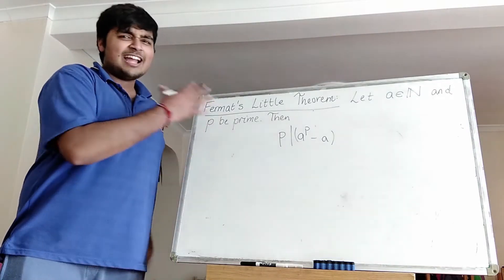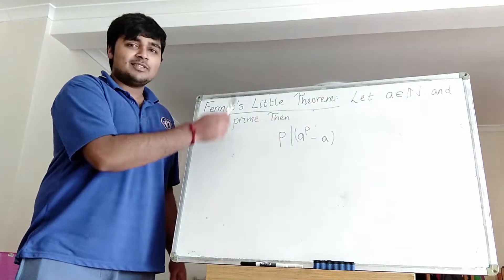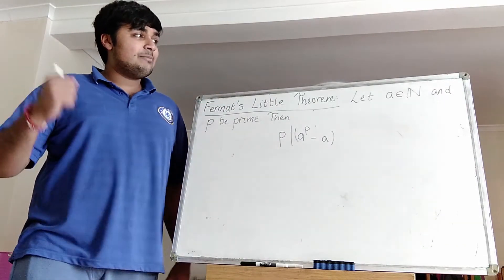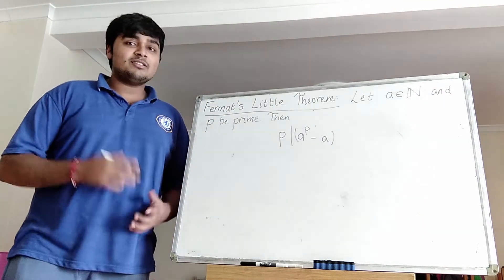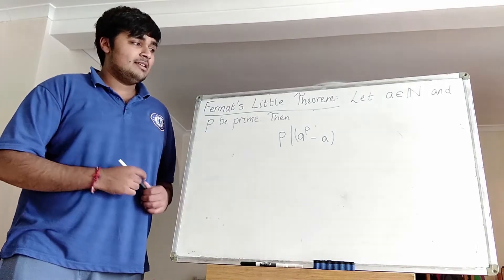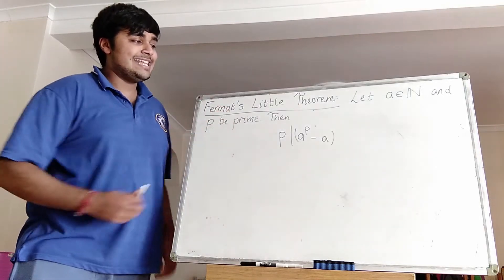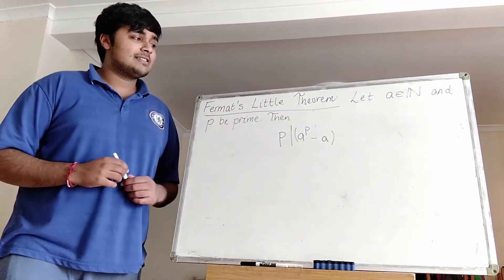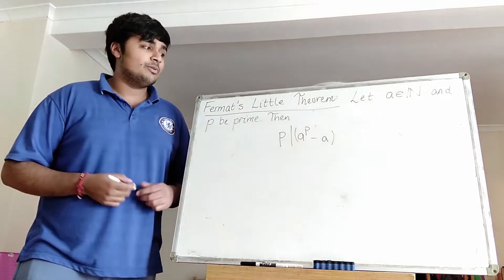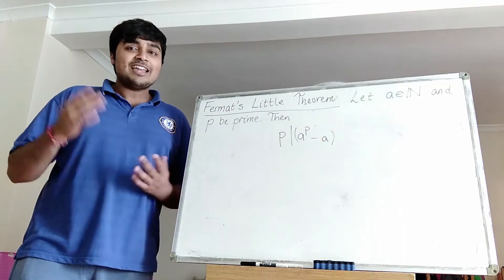There are actually a couple of different formulations of Fermat's Little Theorem, but this is the one I'm going to be using today. Let A be some natural number — some positive integer — and P is a prime number. Then P divides A to the P minus A. So in other words, A to the P minus A is a multiple of P.